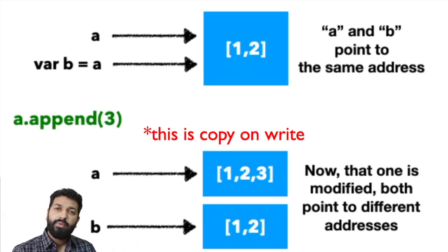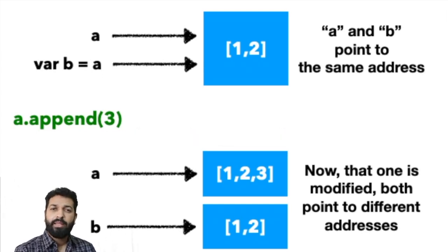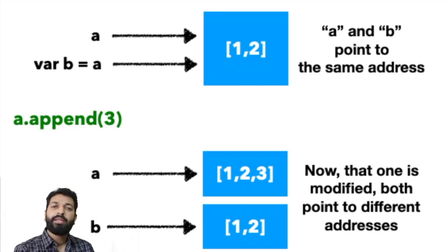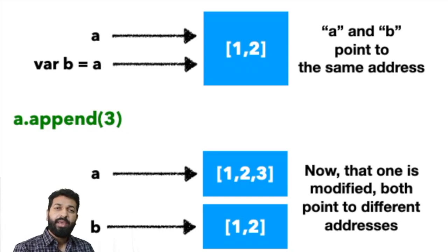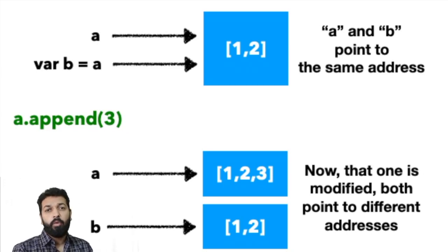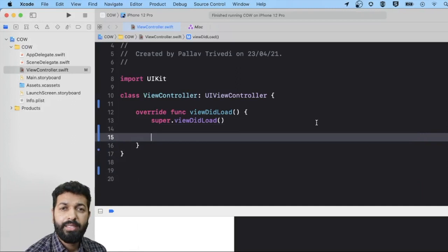This is copy-on-write, and the obvious answer to why it's needed is to enhance performance. Just like buying another TV before it's needed is a wastage of money, making another object before a write operation or mutation is actually required is a wastage of memory. Swift optimizes this by delaying the making of copies unless they are actually required.